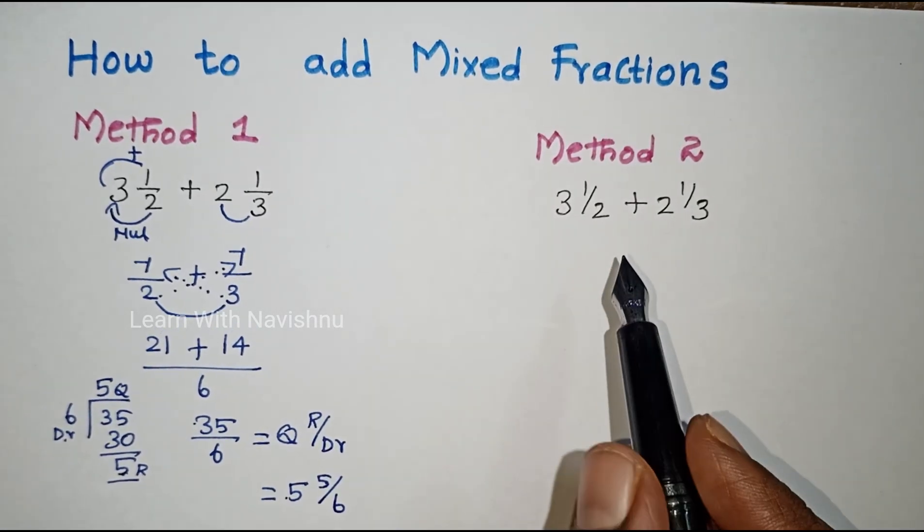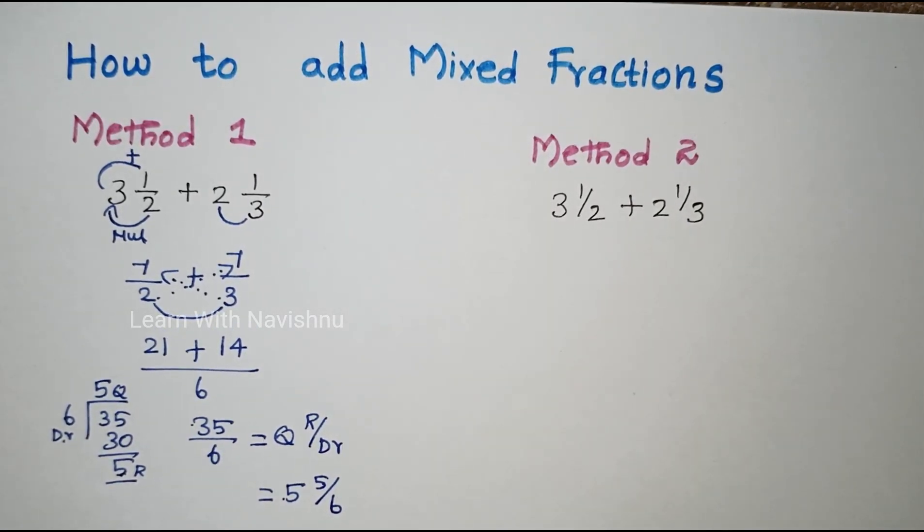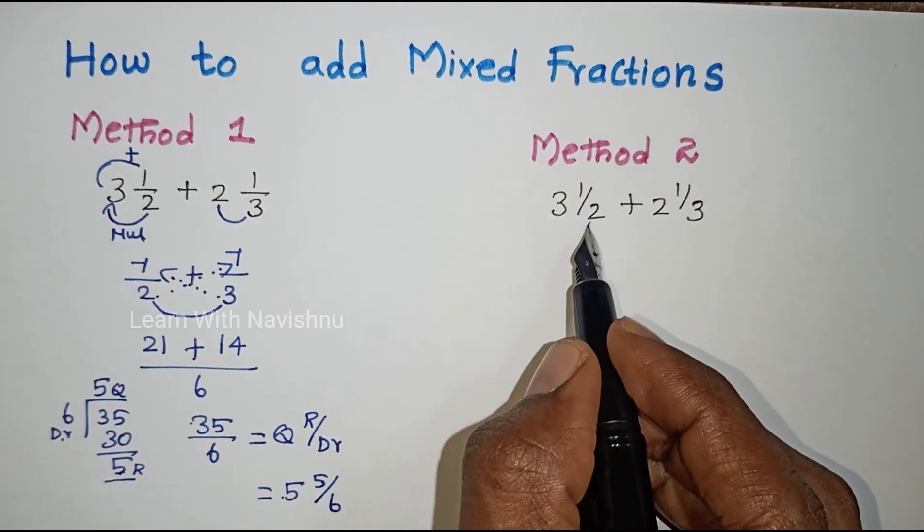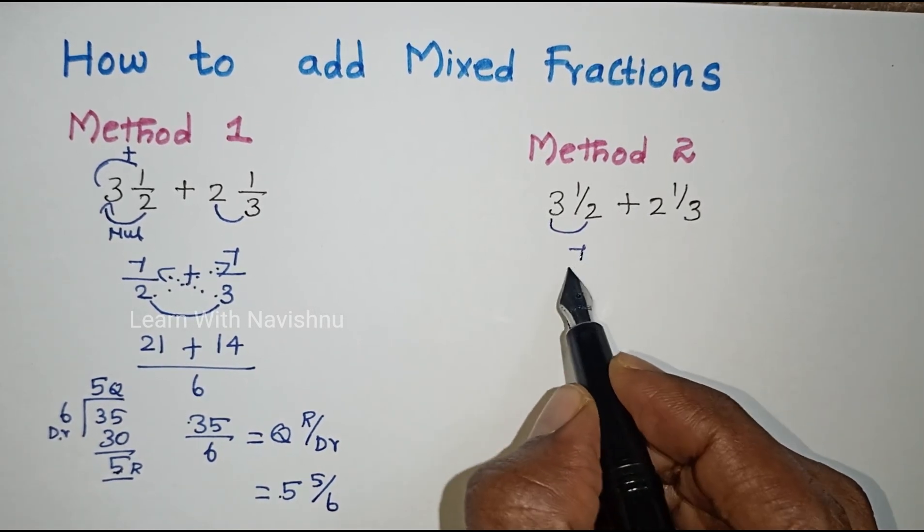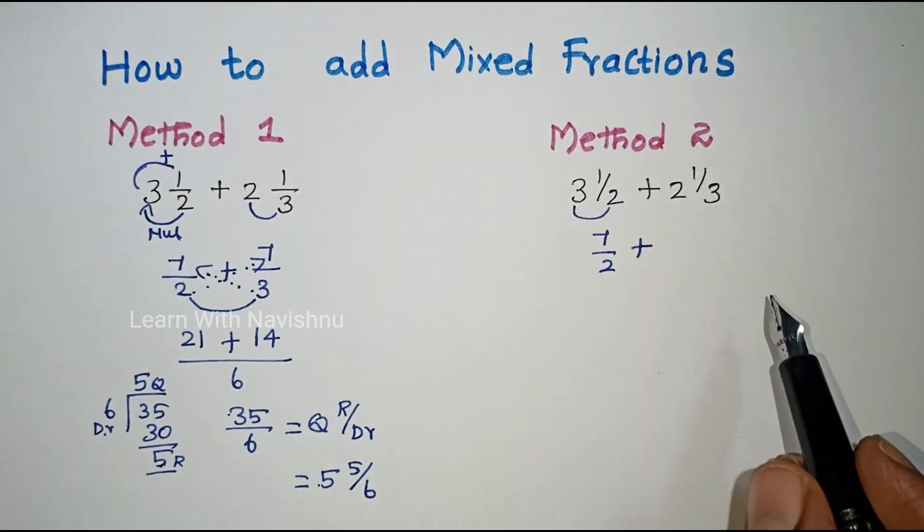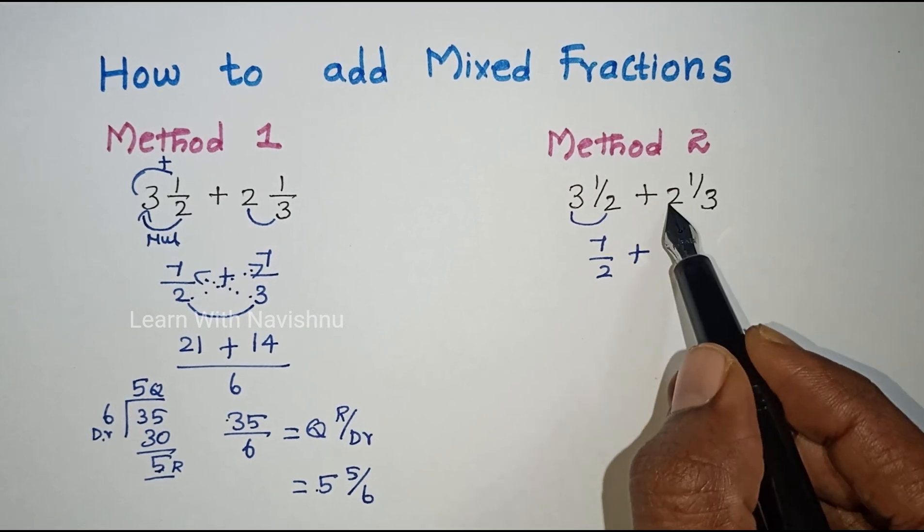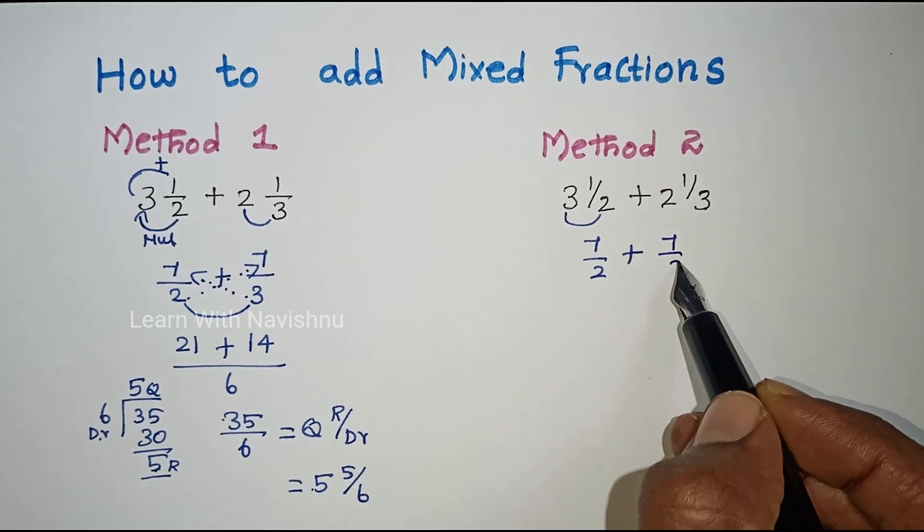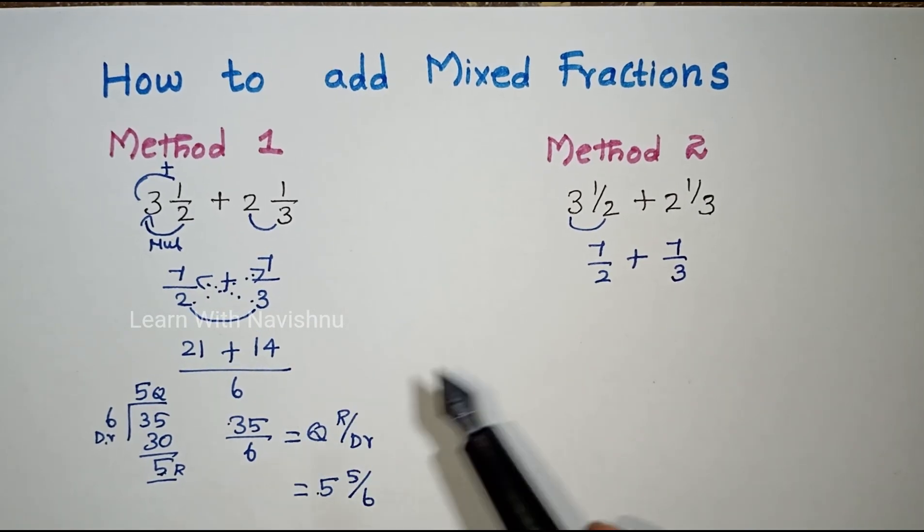Now Method 2, the same problem. The first step is converting to improper: 3 times 2 is 6, 6 plus 1 is 7/2. Plus 3 times 2 is 6, 6 plus 1 is 7/3. When we do cross multiplication, if the denominators are different, you can use LCM.